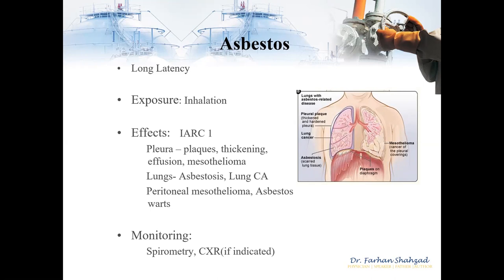Specific terminologies used with asbestos include pleural plaques, benign asbestos pleural effusion, pleural fibrosis, rounded atelectasis — which is collapse of borders of the lung. On examination, we normally see people who are coughing, have crackles, and have certain opacities on x-rays. The pleural plaque shows up as a thickened and hardened pleura, as seen in the picture. With lung cancer, spots can appear and lead to scarring of the lung tissue.